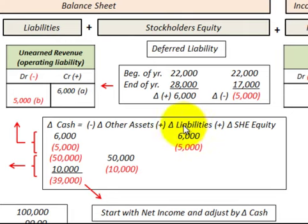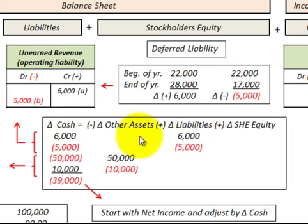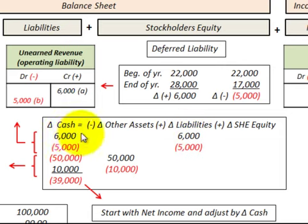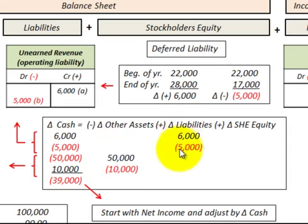Going down to our accounting equation, the change in liabilities is represented by the unearned revenue, and that's a direct translation over to the change in cash. So a plus $6,000 amount in liabilities translates over to a plus $6,000 amount in the change in cash. And a minus $5,000 amount translates over directly to a minus $5,000 in cash.